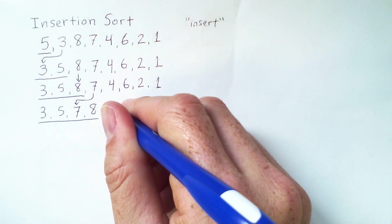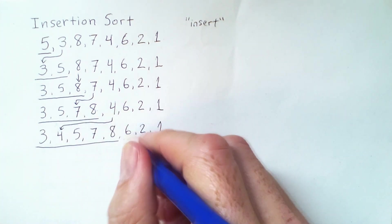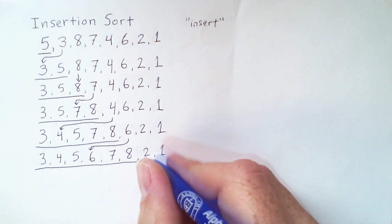Next, we insert the 4. It has to go back a bit further. Then we insert the 6. And then we'll insert the 2.